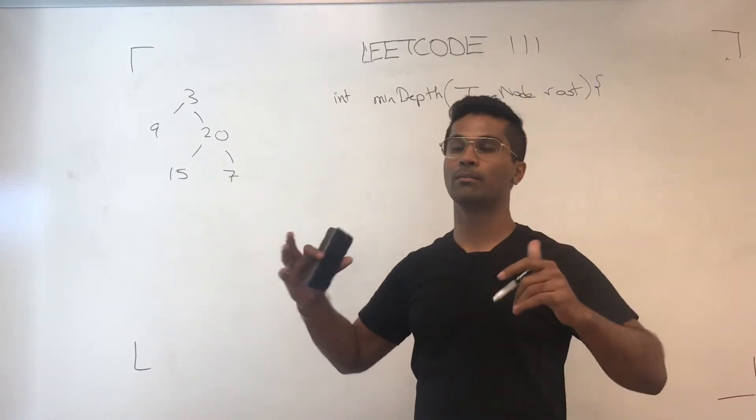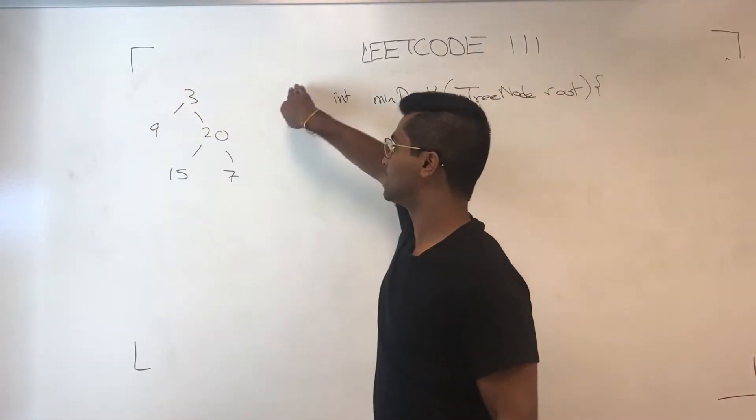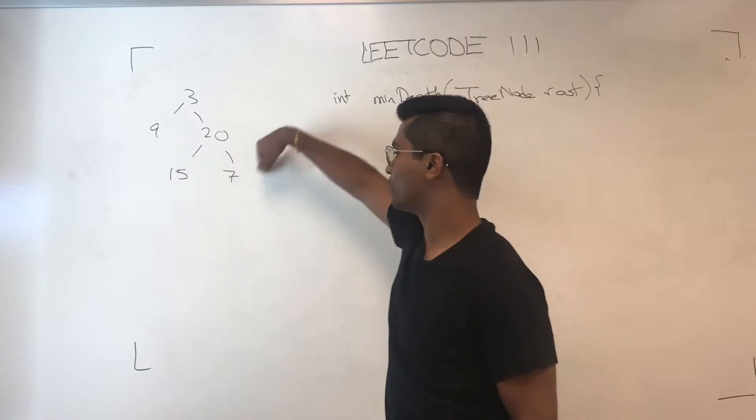Pretty much, we know that BFS works in terms of layers. So if this is the origin, the first layer is going to be this, the second layer would be this.